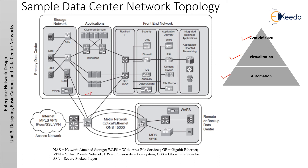This figure shows a sample data center network topology, with storage network on the left, then the application layer, then the front-end network. The front-end network features resilient IP, 10 Gigabit Ethernet, security, VPN, firewall, IDS, anomaly detection guard, application delivery, and integrated business applications. This illustrates a simple high-performance data center network topology requiring many technologies as connectivity options among applications and data centers. The topology provides connectivity for network elements within the data center such as servers and storage, as well as external users or other data centers.